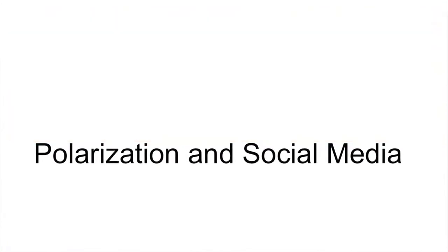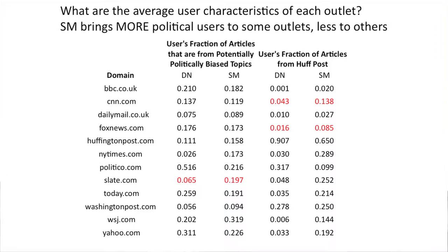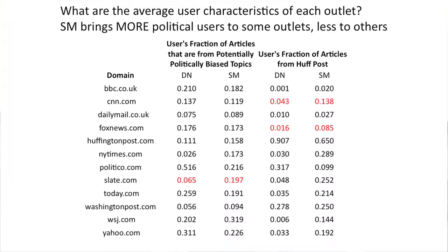Now, polarization and social media. What we look at first is trying to characterize outlets' audiences. Here's a list of domains with some characteristics of their users — the user's fraction of articles that are from potentially polarized topics, and the user's fraction of articles from Huffington Post. What we see is that outlets get different audiences from direct navigation and social media. For example, Slate.com — the political interest of readers they get from social media is much higher than the political interest of readers they get from direct navigation.